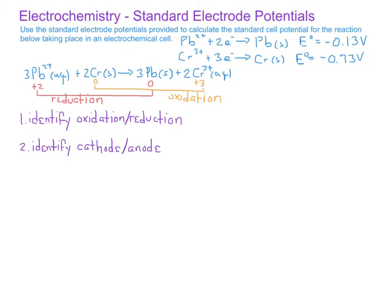The second thing we want to do is identify what's the cathode and what's the anode. We know that the cathode undergoes reduction and the anode undergoes oxidation. Since the lead/lead 2+ half-reaction is a reduction, that means the lead/lead 2+ half-cell is the cathode. On the other hand, the chromium/chromium 3+ half-cell is undergoing oxidation, so it is the anode.